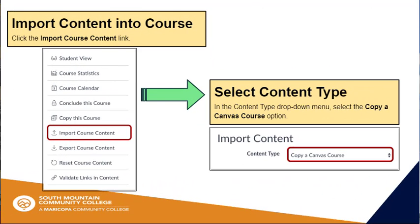Then, notice the menu on the right side of the screen with Student View listed at the top. Underneath that, you will find the Import Course Content button — click on that link. A drop-down box will appear prompting you to select what type of content you want to copy. Select Copy a Canvas Course.